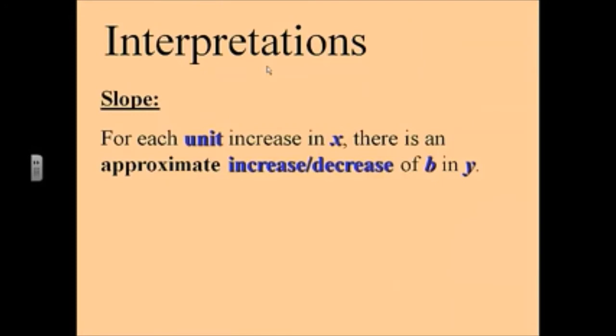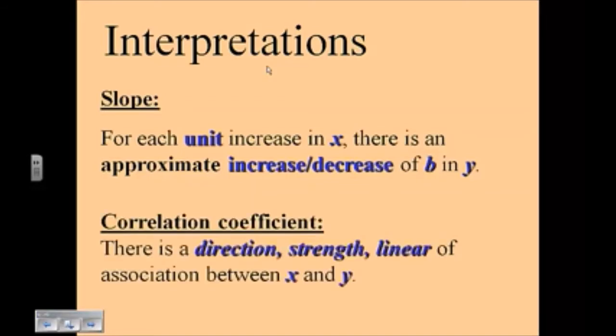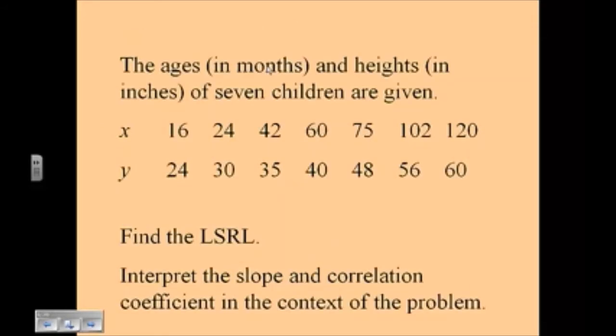The slope. So for every unit increase in x, there is an approximate, and the key phrasing there is approximate, make sure you include that, there is an approximate increase or decrease of b values in y. And the correlation coefficient, remember we talked about this in the previous video, you want to talk about the direction, the strength, and the form. So is it positive or negative, is it strong or moderate, is it linear or not?